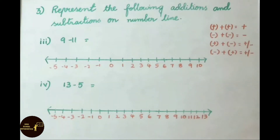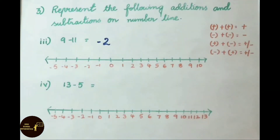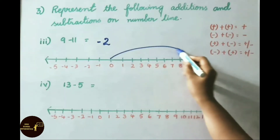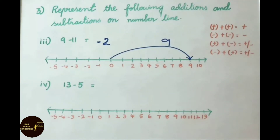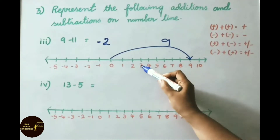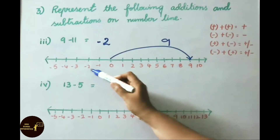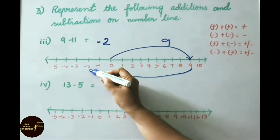Third: 9 - 11. Here 11 - 9 = 2, and the bigger number 11 carries a minus sign, so the answer is -2. On the number line, start at 9 and count 11 places backwards to reach -2. So 9 - 11 = -2.